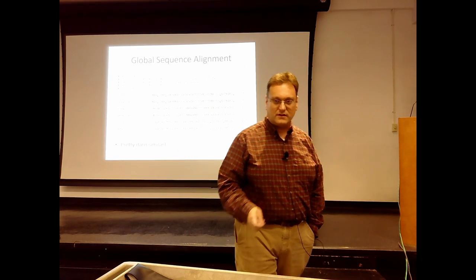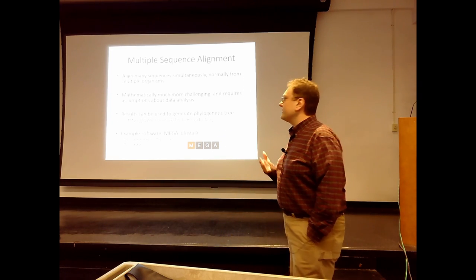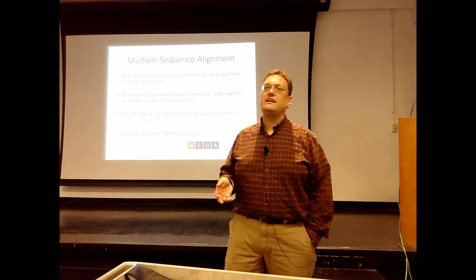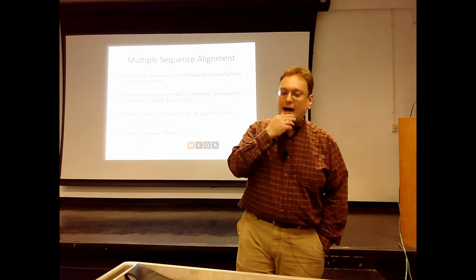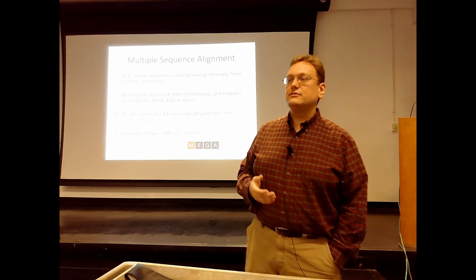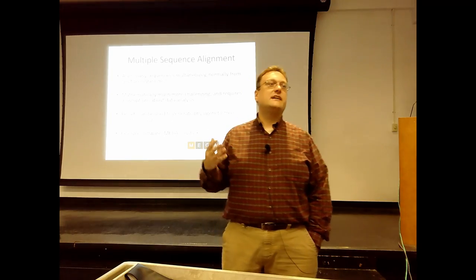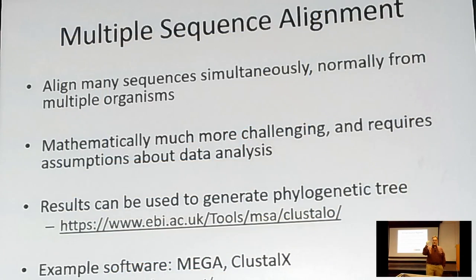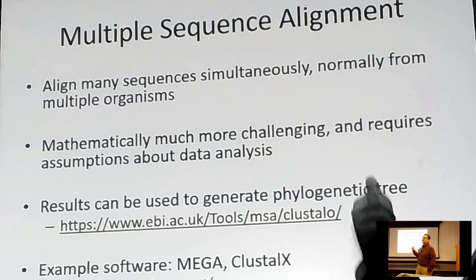There are also programs for multiple sequence alignment that we won't talk about too much, but you might encounter - things like ClustalW or the Mega program, to do comparisons of many sequences at the same time. Maybe I have calmodulin from nematode, human, rabbit, and some kind of fungus. The reason I chose nematode is that if I use rabbit, chicken, horse, or cow - all traditional mammalian counterparts - those calmodulins are essentially identical, not differing by a single residue.